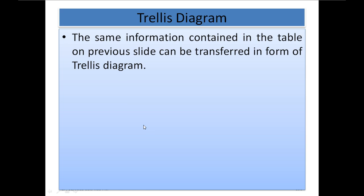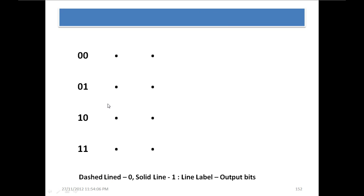How this trellis diagram works, let's see. First of all, we write down the 4 possible states for a 2,1,2 encoder. Then we use a dashed line for 0 and a solid line for 1, though it can be the other way as well. It is up to you how you are going to use the convention, but you have to define it — whether you are going to use dashed line for 0 or solid line for 1.